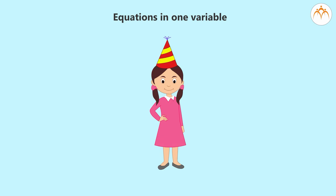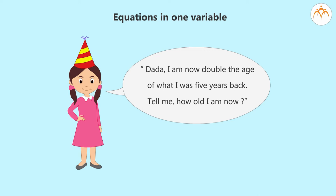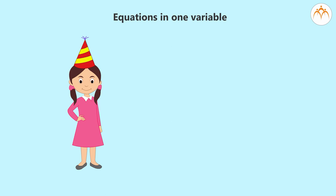I have a friend called Akanksha. This year when I had gone for her birthday, she told me: 'Dada, I am now double the age of what I was five years back. Tell me how old I am now.' How do we solve this problem? We have to find the present age of Akanksha, so we will show this by the variable X.